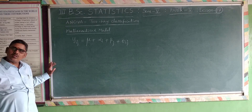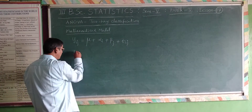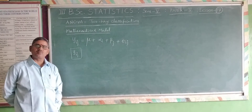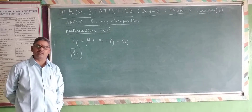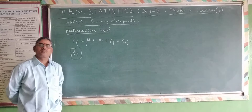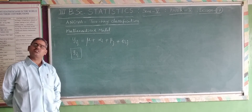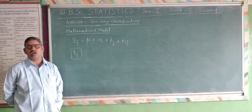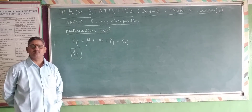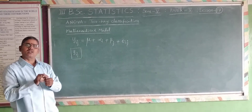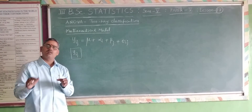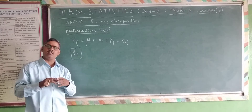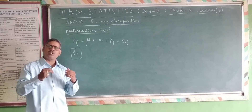I will explain the terms one by one. What is yij? yij is the measurement or yield from the j-th variety by applying the i-th treatment. yij is the yield or measurement from the experimental unit by applying the i-th treatment and j-th variety — by applying these two kinds of factors, one particular treatment and another particular variety.